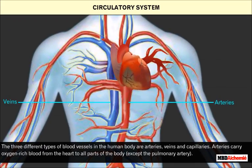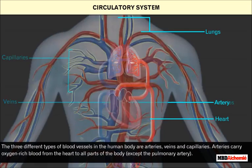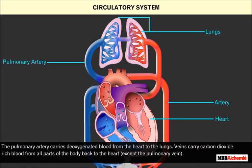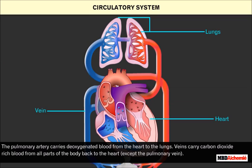The three different types of blood vessels in the human body are arteries, veins, and capillaries. Arteries carry oxygen-rich blood from the heart to all parts of the body, except the pulmonary artery. The pulmonary artery carries deoxygenated blood from the heart to the lungs.